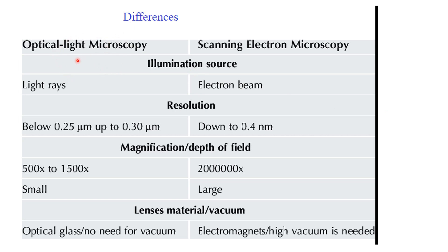These are the differences between optical microscopy and SEM. In the optical case we use light rays; in SEM we use an electron beam. The resolution in optical microscopy cannot go beyond 0.3 micrometers due to the wavelength limit, whereas in SEM we can go up to 0.4 nanometers. The magnification in optical microscopy is around 500 to 1500 times. The lens material is optical glass in optical microscopy, whereas in SEM electromagnets are used. In optical microscopy no vacuum is needed, but for electron microscopy vacuum is required for the traveling of electron beams.